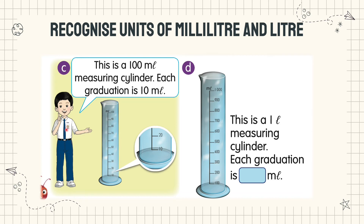C. The boy says: this is a 100 ml measuring cylinder. Each graduation is 10 ml. Ini ialah silinder penyukat 100 ml. Setiap sengatan ialah 10 ml. D. This is a 1 L measuring cylinder. Each graduation is 100 ml. Satu L ataupun satu liter bersamaan dengan seribu ml ataupun seribu mililiter.